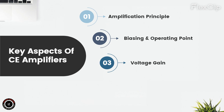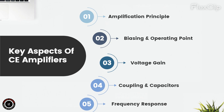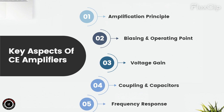Voltage gain: CE amplifiers provide voltage amplification, which is the ratio of the change in output voltage to the change in input voltage. This gain is determined by the transistor's characteristics and the surrounding circuit components. Coupling capacitors: coupling capacitors are used to separate AC and DC components in the amplifier circuit. AC coupling prevents unwanted DC bias from interfering with signal amplification, ensuring proper operation. Frequency response: CE amplifiers have a frequency response that defines the range of frequencies they can effectively amplify. Capacitive and inductive elements in the circuit affect the lower and upper frequency limits.